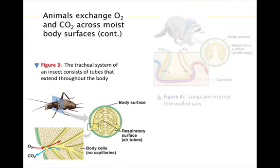The tracheal system of an insect is an extensive system of branching tubes with the respiratory surface found at their tips. The smallest branches exchange gases directly with the body cells, and therefore gas exchange in insects requires no assistance from the circulatory system.